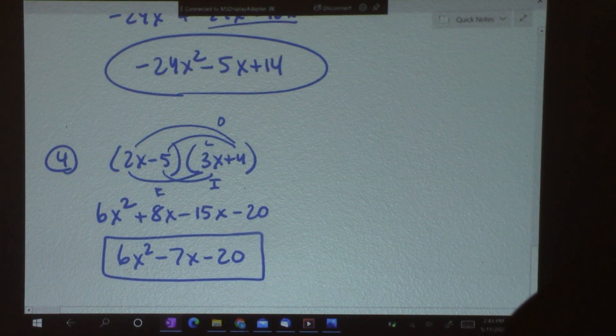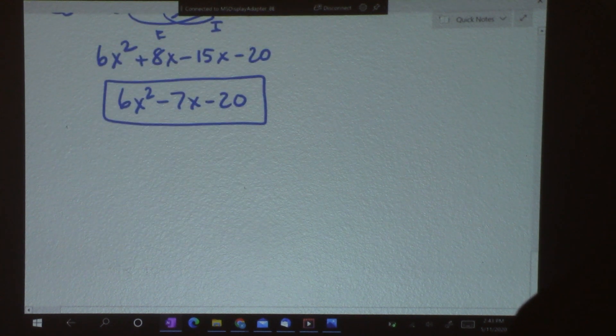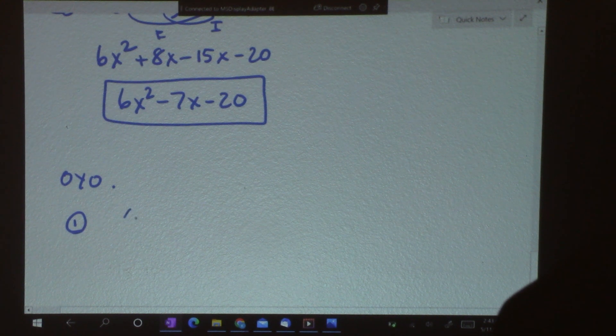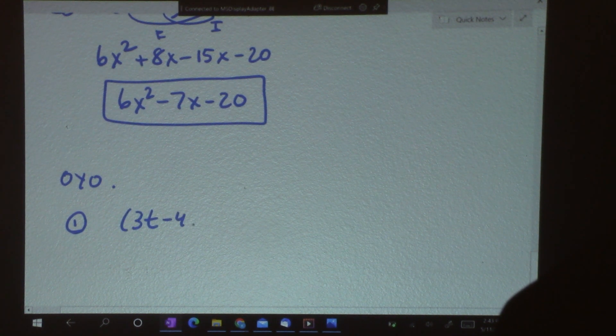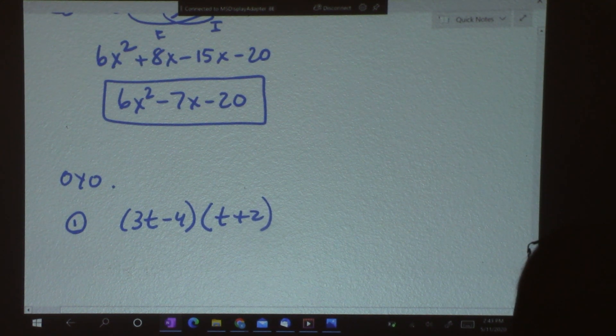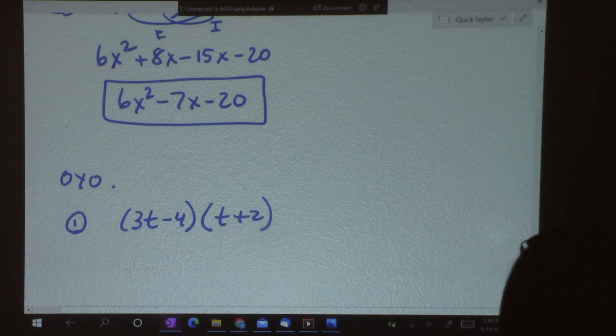I want you to try one of those. Here's your OYO. Number 1. 3t minus 4 times t plus 2. So, go ahead and pause the video and work that out.